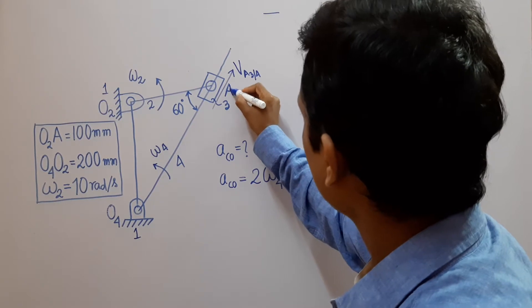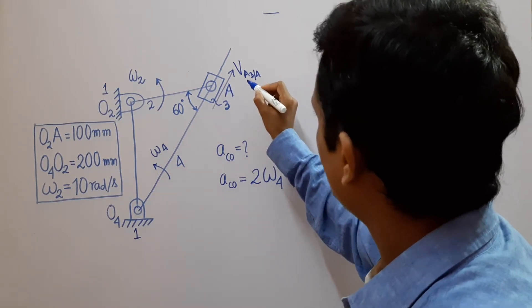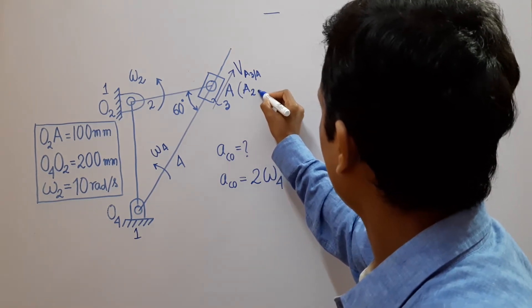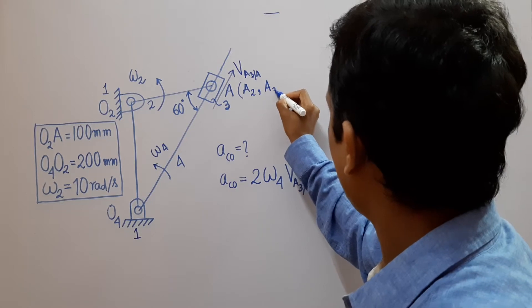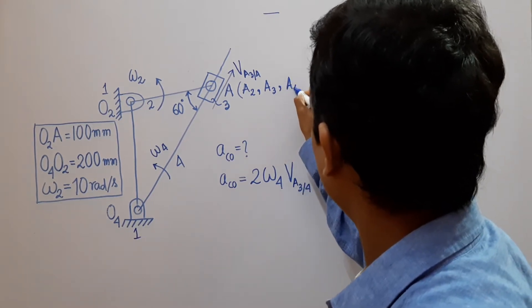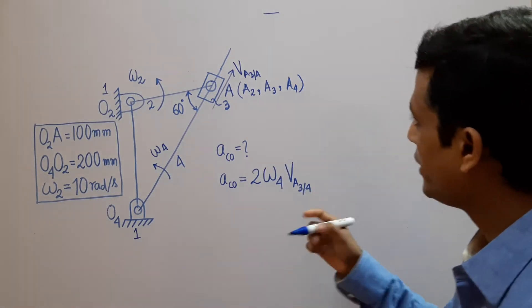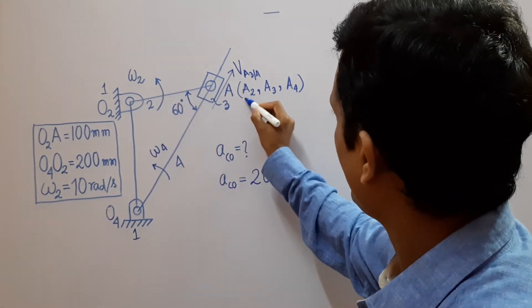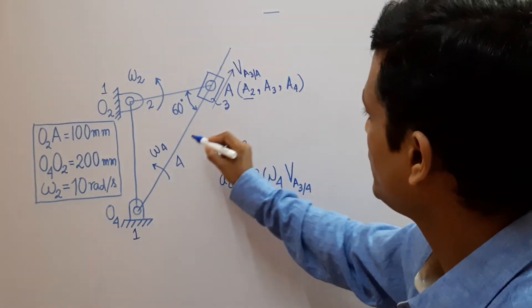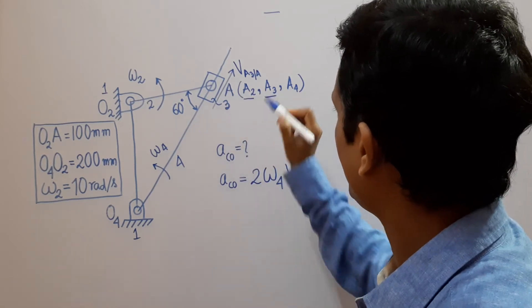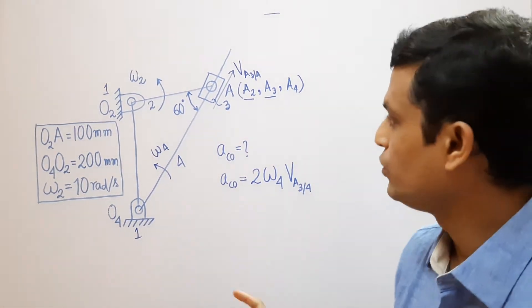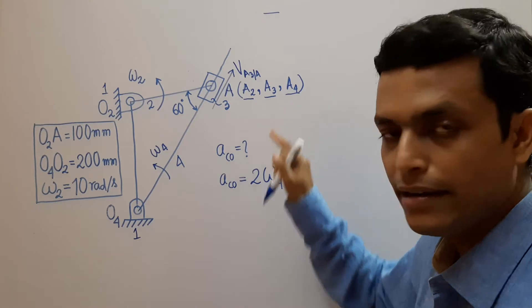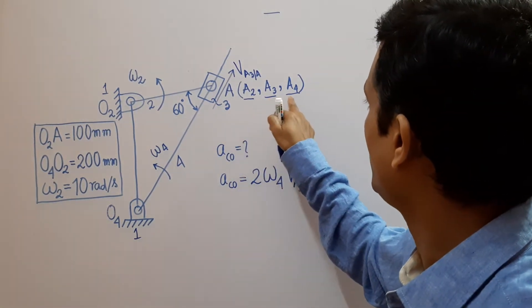Here there exist 3 coincident points. Point A lies on link number 2 (that is A2), on link number 3, and on link number 4. So point A lies on 3 links. The point A on link 2 (the crank) is A2, the point A on link 3 (the slider) is A3, and the point A on link 4 is A4. So there are 3 instantaneously coincident points: A2, A3, and A4.